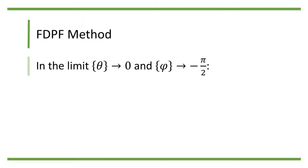In FDPF, we take the limit theta approaching 0 and phi approaching minus pi over 2. In such case, both partial P over partial U and partial Q over partial theta approach 0.